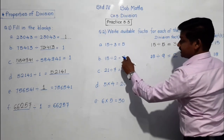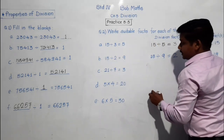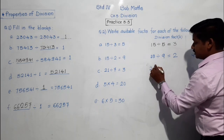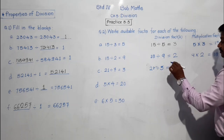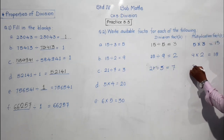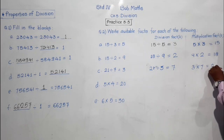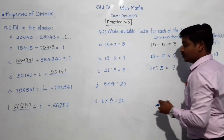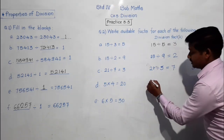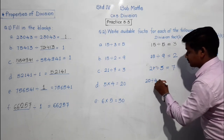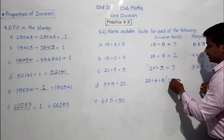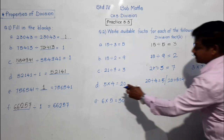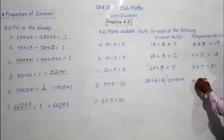18 divided by 2 equals 9, therefore 9 into 2 equals 18. Next: 21 divided by 7 equals 3. This can be written as 21 divided by 3 equals 7, and the multiplication fact is 3 into 7 equals 21. Now for a multiplication example: 5 into 4 equals 20. How can we write this as a division fact? 20 divided by 4 equals 5, or 20 divided by 5 equals 4. And in multiplication form: 5 into 4 equals 20, or 4 into 5 equals 20.